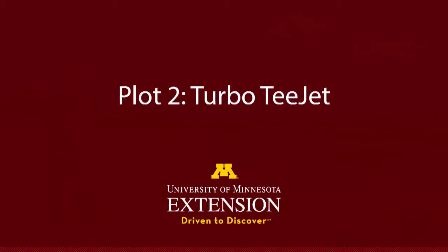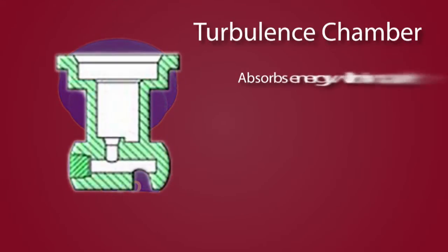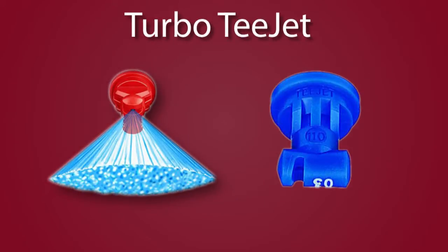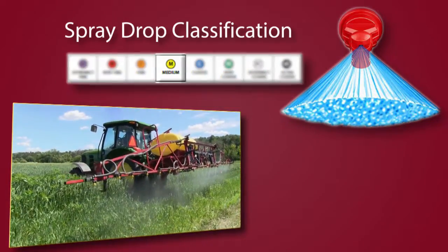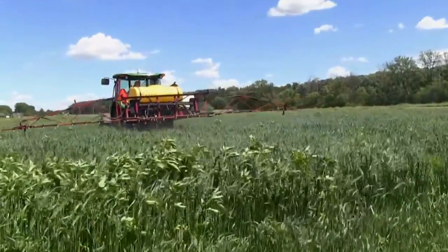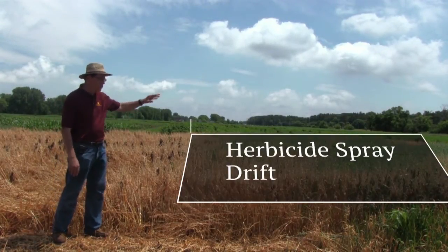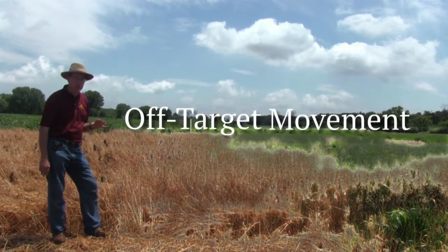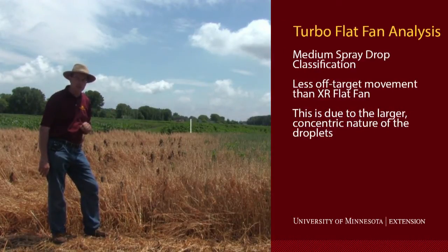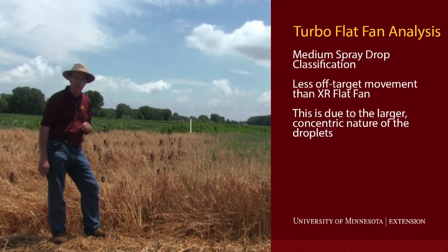The second plot we're going to be looking at is a turbo flat fan. This style of nozzle from Spraying Systems Company is similar to a flood jet laid on its side. It has a turbulence chamber but it is not air induction. It produces droplets that are more concentric and more even in size. The classification here would be a medium-sized droplet for the primary area, though it can become small depending upon the pressure range applied. It's an O2 nozzle size, and if we look back to our pole at the end of the plot and immediately to the south, you'll again see some off-target movement — maybe not quite as much as with the fine droplet XR flat fan, but certainly there is a percentage of droplets capable at normal pressures of 40 to 45 PSI of moving off-target.